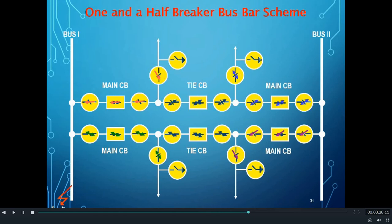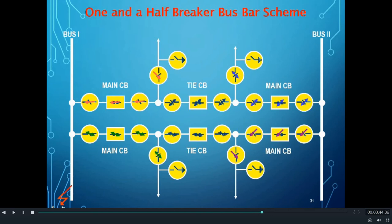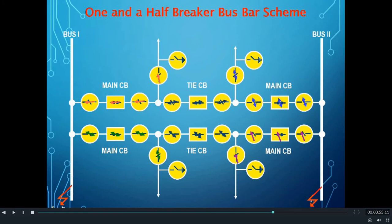From the figure it is clear that all feeders connected to the system are still connected through bus two and can work normally even with the existing fault in bus one. Now, if there is also a fault in bus two, let us see how this busbar scheme works in that condition as well.